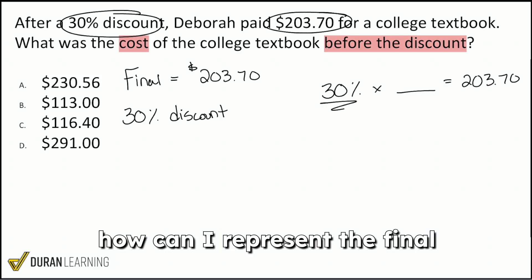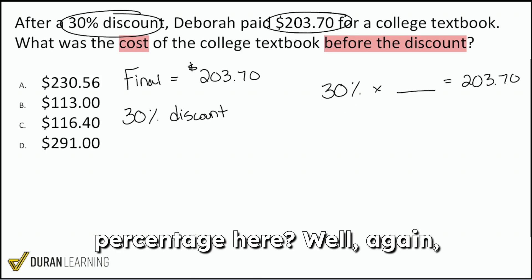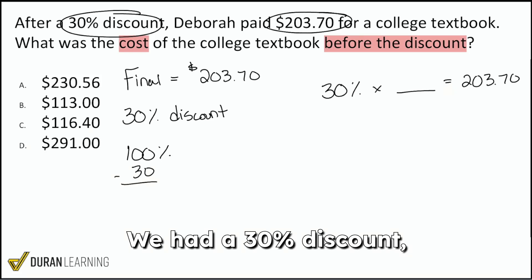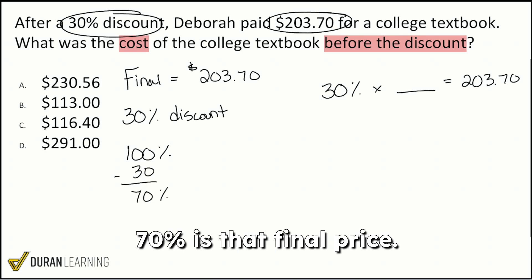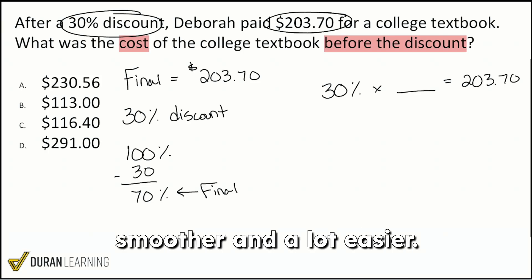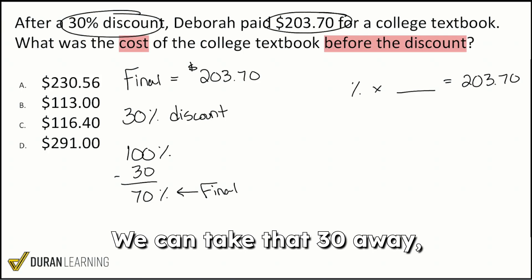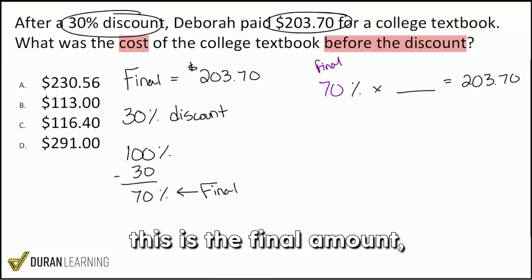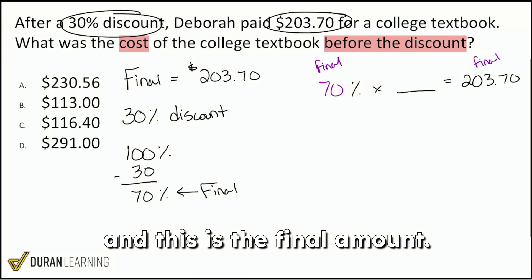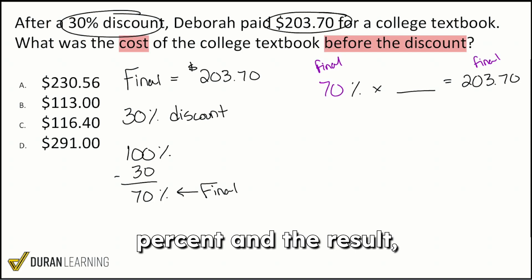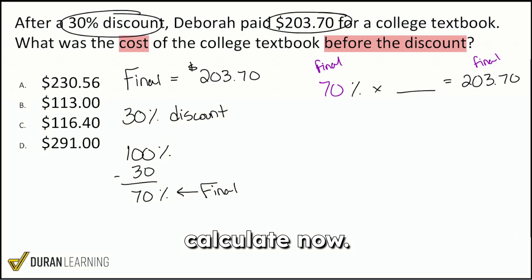Just like in the previous question, we ask: how can I represent the final percentage here? Again, the original amount is 100%. We had a 30% discount, and if we take that away, 70% is the final price. So we replace the 30% with 70%, because both this percentage and this dollar amount represent the final amount. Now that we have the same things represented in the percent and the result, we can go ahead and calculate.